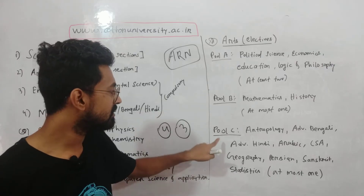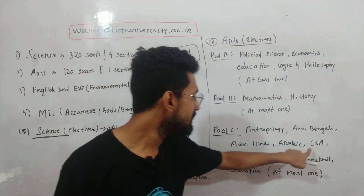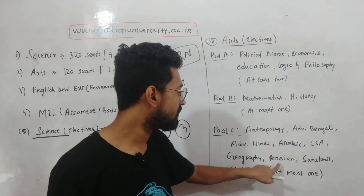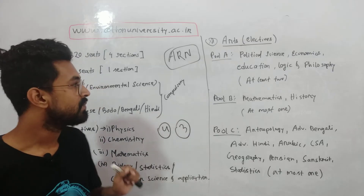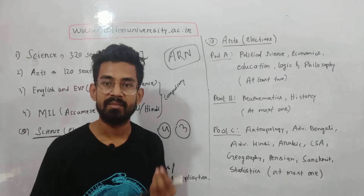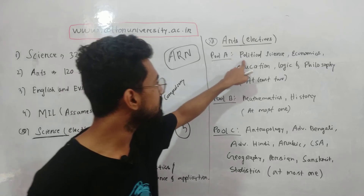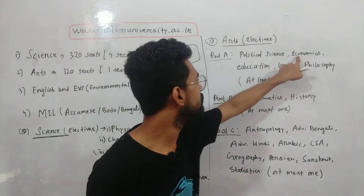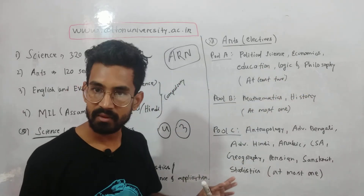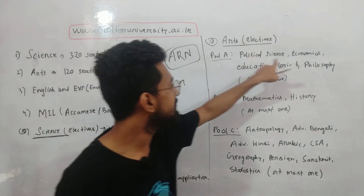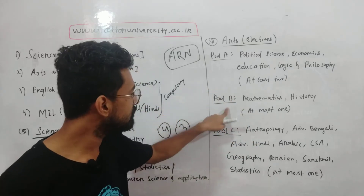The elective subjects available include anthropology, advanced Bengali, advanced Hindi, Arabic, CSM, computer science and applications, geography, Sanskrit, and statistics. These are the elective options, and they are not compulsory. For the arts stream, elective subjects include political science, economics, education, logic, and philosophy. A combination can be, for example, political science, economics, and education. Another combination could be political science, economics, mathematics, and anthropology. You need at least three elective subjects.